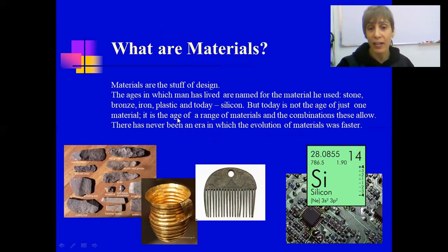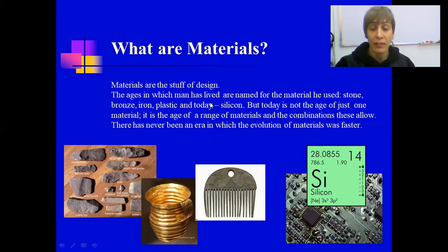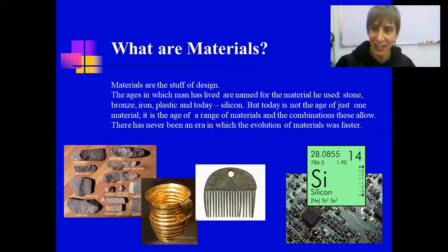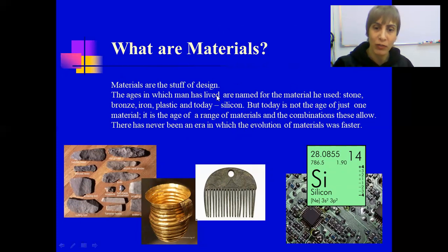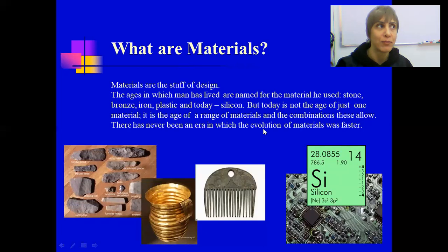So what are materials? They are the stuff of design. Everything is made out of materials. Materials are so important that even the ages we have lived in the past have been defined by material — for example, the stone age, bronze age, iron age, and so on. Then the silicon age, because when silicon was discovered it made it possible for technology to develop. Nowadays we have basically millions of materials — never in history has an age had so many material choices.